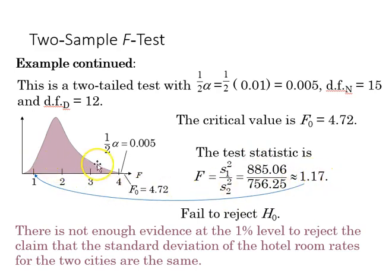1.17 does not fall in the rejection zone outside of 4.72, and therefore there's not enough evidence at the 1% level to reject the claim that the hotel room rates for the two cities are the same.